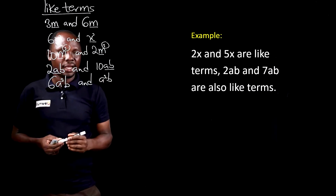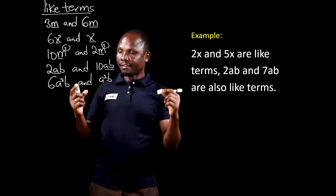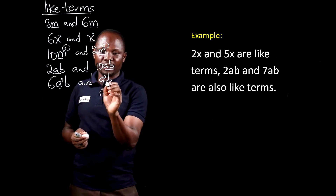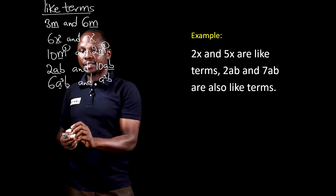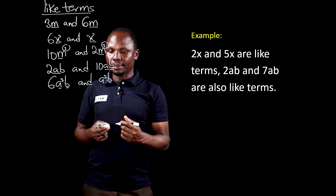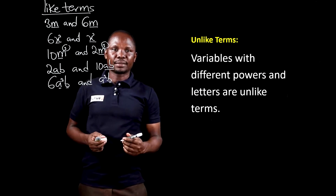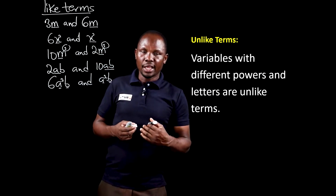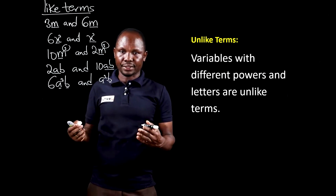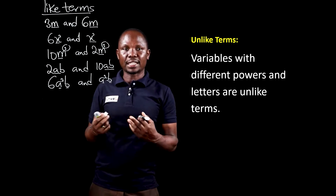6a squared b and a squared b are also like terms because the variables are the same. The power of the first a is 2 and the power of the second a is also 2. The power of the first b is 1 and the power of the second b is also 1. So, 6a squared b and a squared b are like terms. We'll continue the lesson by looking at unlike terms. Terms are unlike terms if the variables are different, or if the variables are the same but they have different powers or exponents.